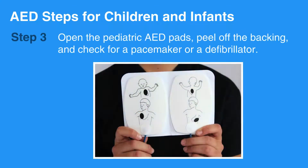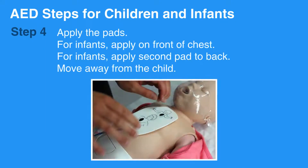Then, open the pediatric AED pads, peel off the backing, and check for a pacemaker or a defibrillator. Apply the pads. Apply one pad to the upper right chest above the breast. For infants, apply in front of the chest. Apply the second pad on the lower left chest below the armpit. For infants, apply a second pad to the back.